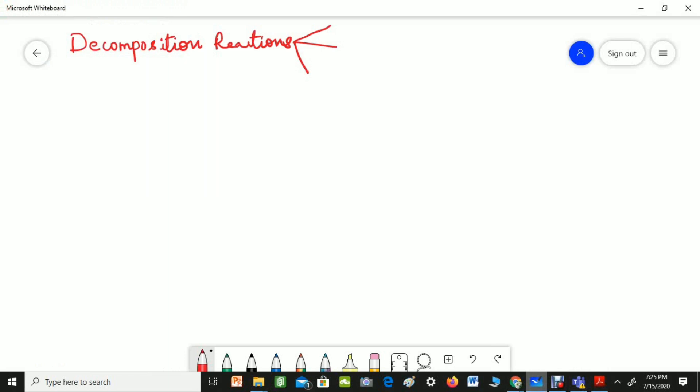As you know decomposition reaction means breaking down of a compound by using heat, light or electricity. You can use heat, so accordingly we call it as thermal decomposition. Then you can use light energy to decompose a compound, it is called photolytic decomposition or photolysis and you can use electricity to decompose a substance. It is called electrolytic decomposition or electrolysis.